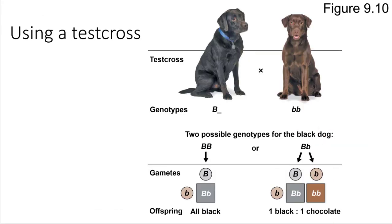In the example we just looked at with pea plants, that was a situation where we knew the genotype of the parents going into the experiment. But we can also do experiments in the reverse direction. Sometimes there might be an organism that we don't know the underlying genotype of — all we have access to is their phenotype, and maybe we want to figure something out about the genotype. This is called doing a test cross.